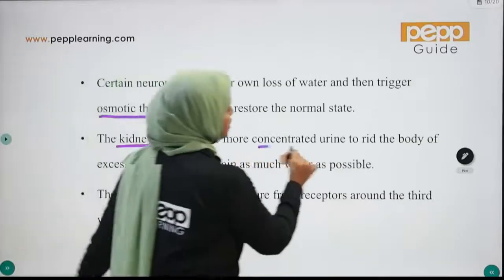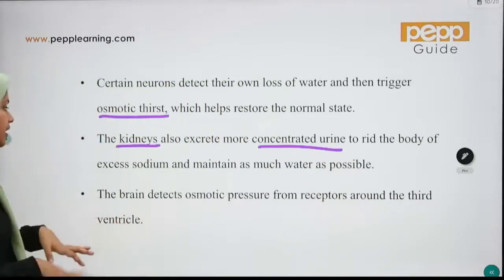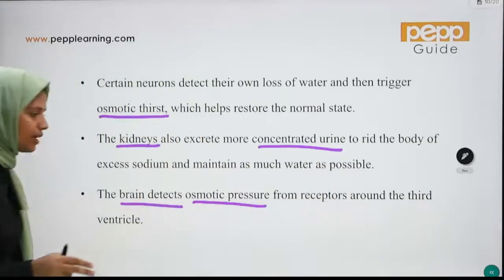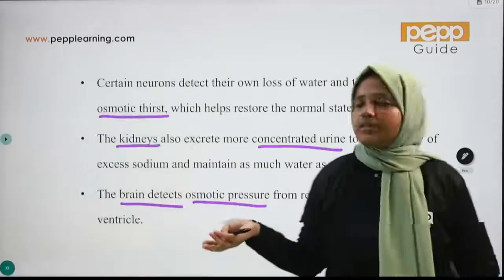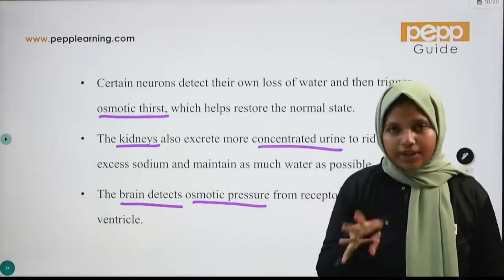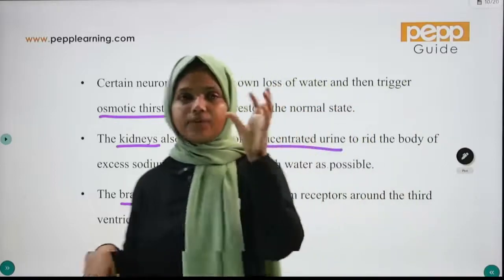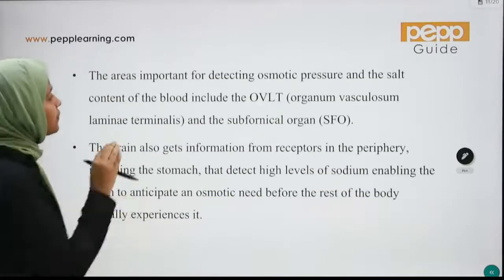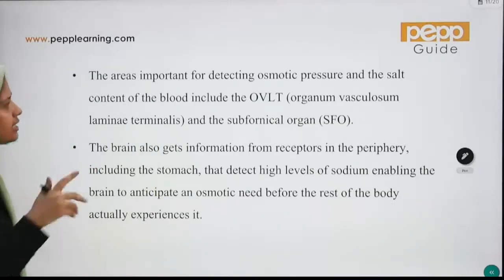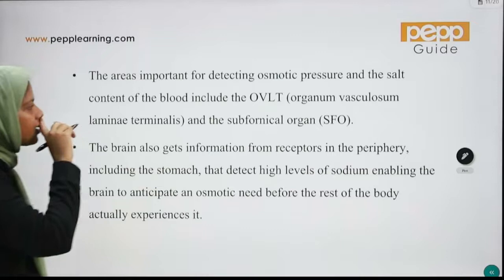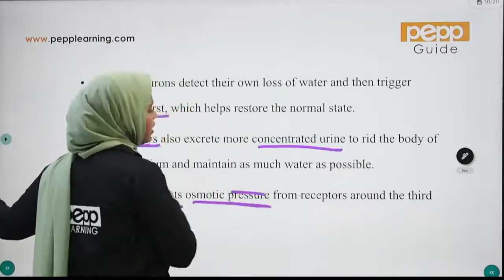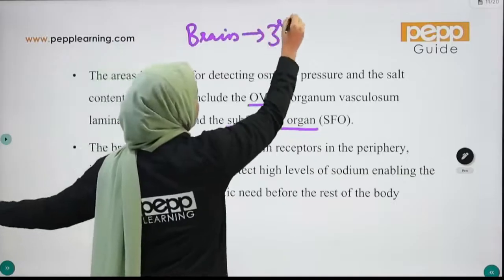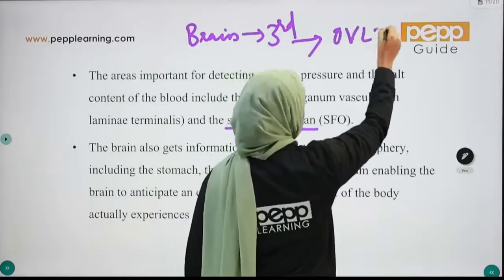The kidneys concentrate the urine as much as possible to retain water. The brain detects osmotic pressure from receptors around the third ventricle. There are two key structures detecting osmotic pressure and salt content of the blood: OVLT (organum vasculosum laminae terminalis) and the subfornical organs (SFO).